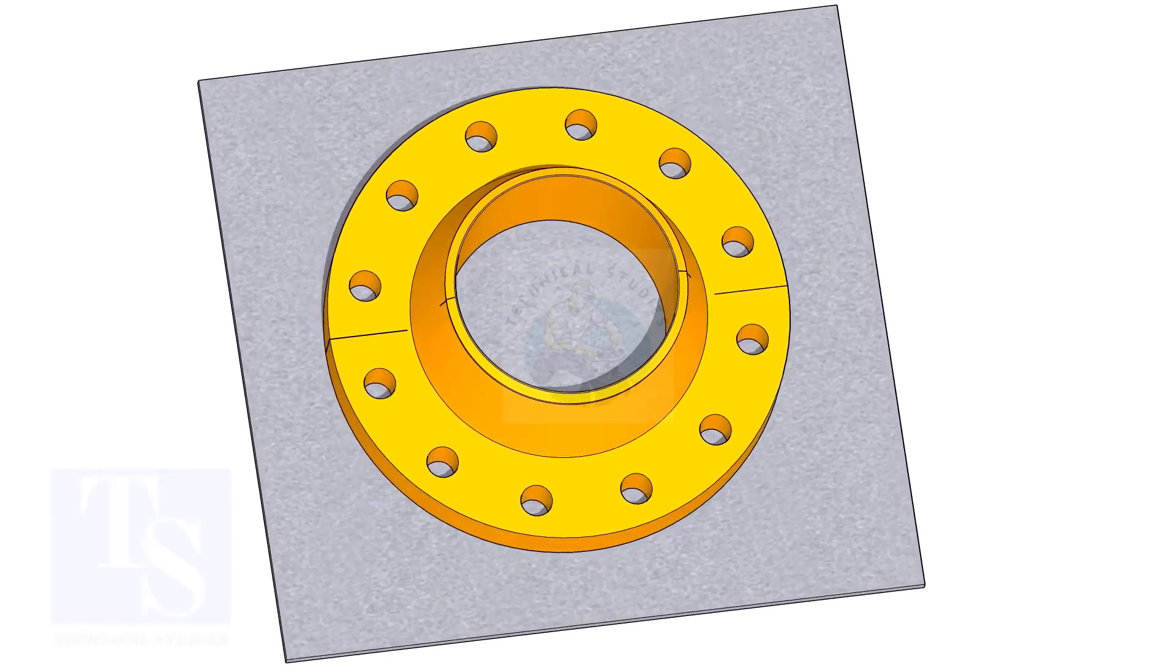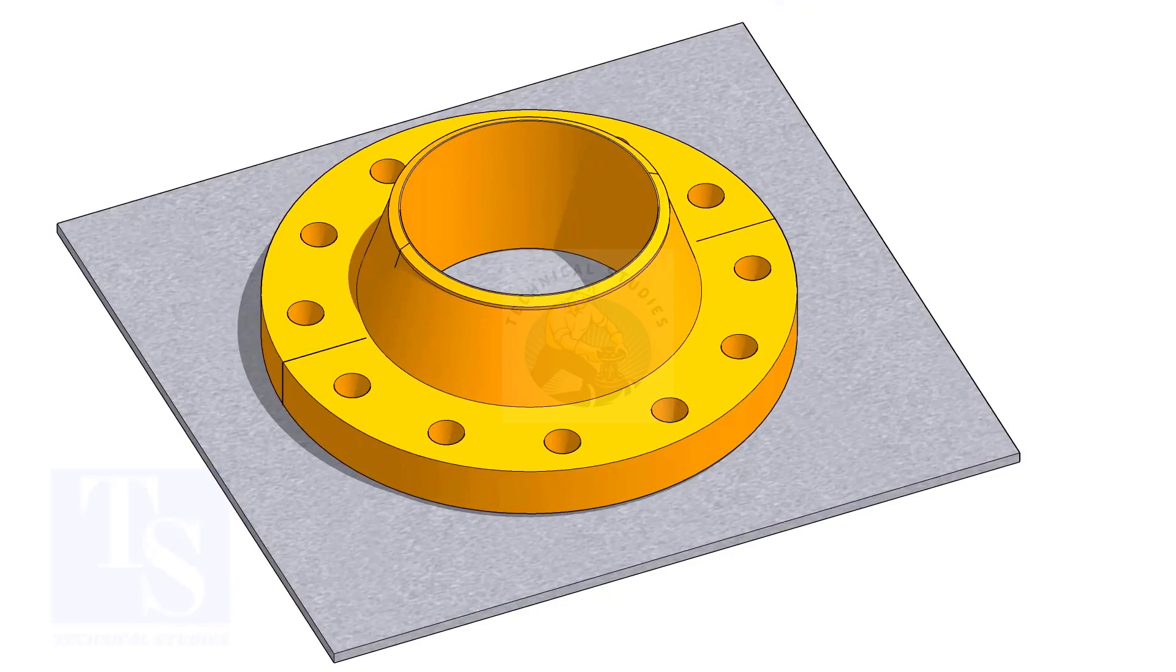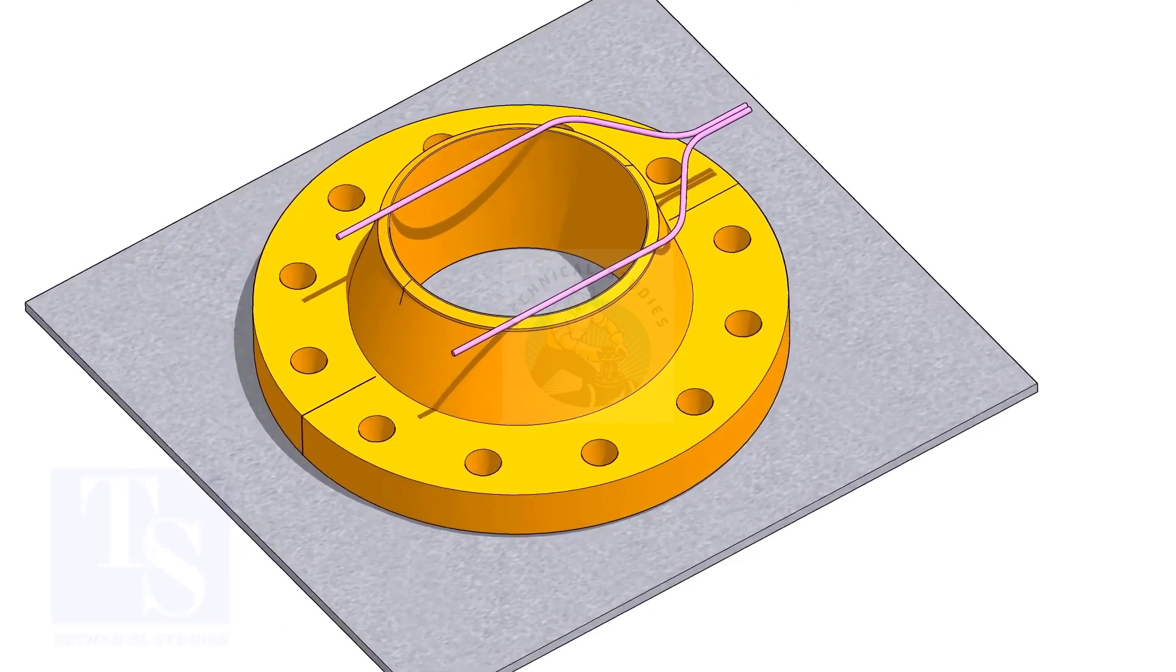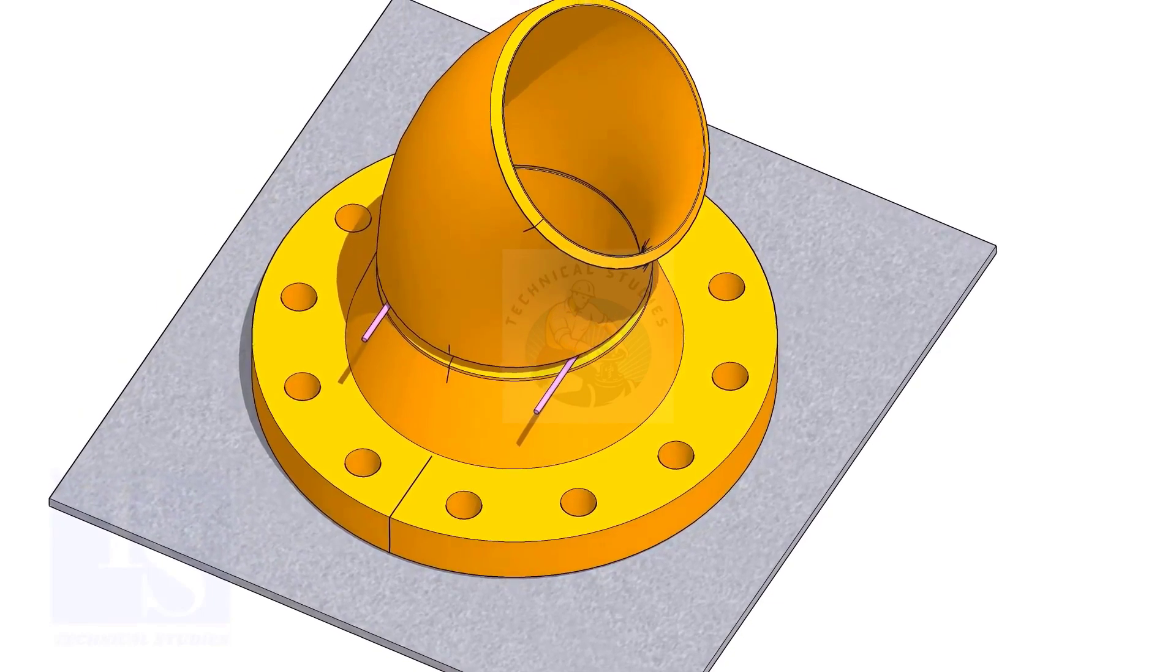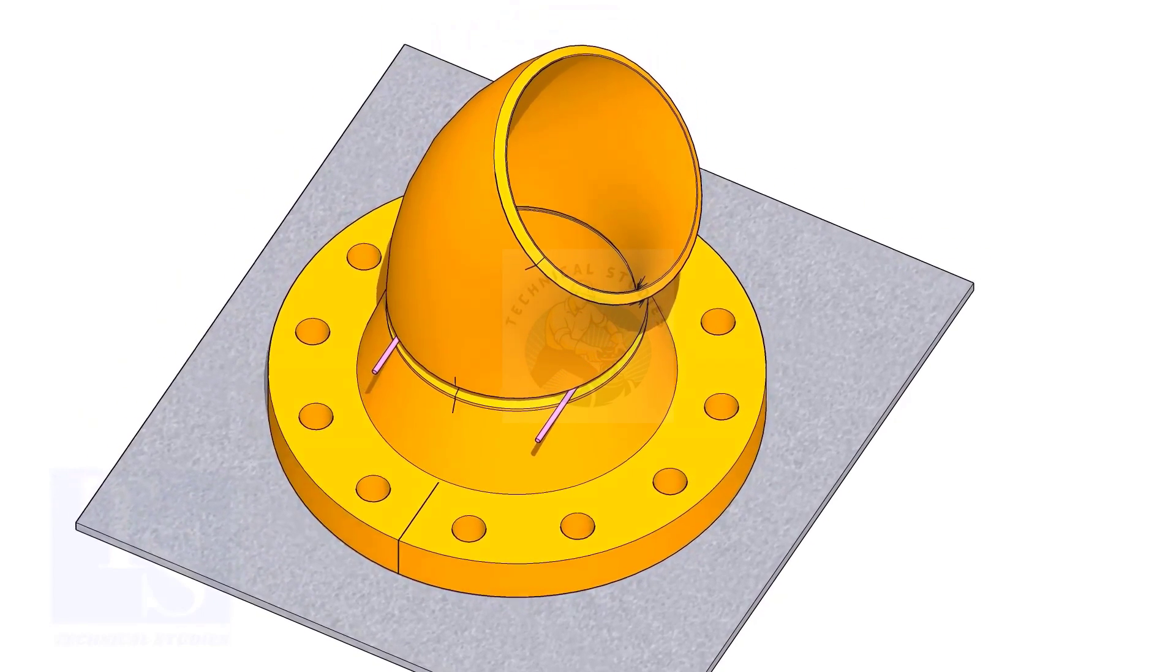Put the flange on a straight plate. Put the gap rod and the elbow on it. Match the center lines of the elbow and the flange.